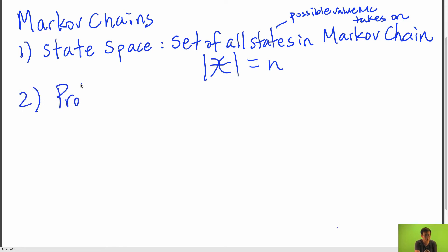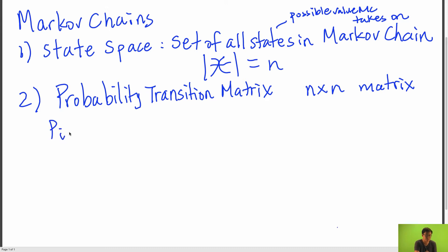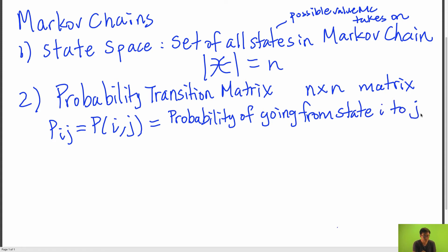The second component is a probability transition matrix. If the cardinality of our set is n, then this is an n by n matrix, and the entries essentially contain the transition probabilities for our Markov chain — in other words, the probability of going from one state to another. More specifically, p sub i j, as written here, is the i-th row and j-th column of our matrix, and this is the probability of going from state i to state j. A property of this matrix is that the rows must sum to one.